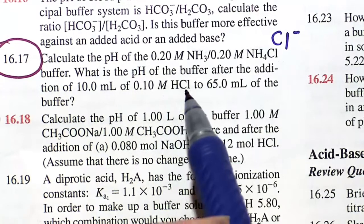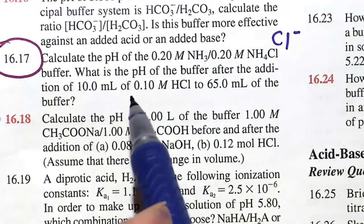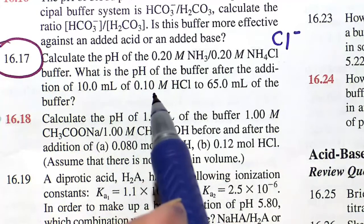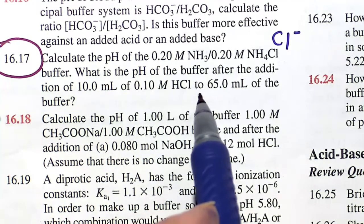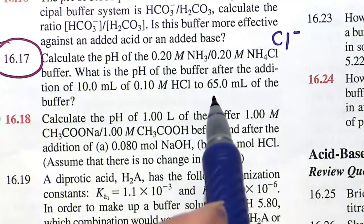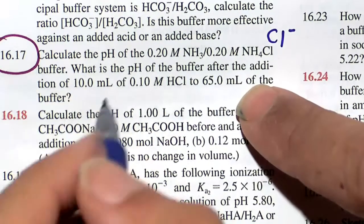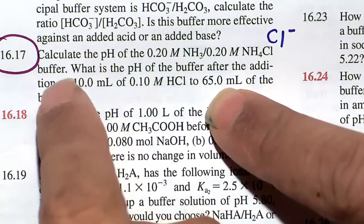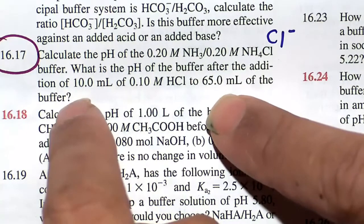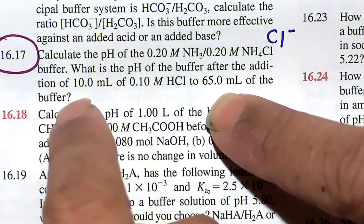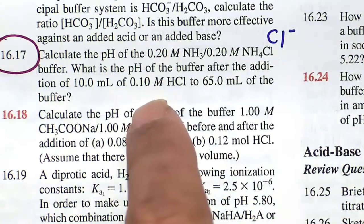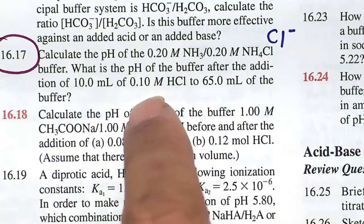In part B, we're going to disturb this buffer. The way we disturb this buffer is by adding an acid. HCl represents a strong acid - it's one of our six strong acids. We add 10 milliliters of a 0.10 molar concentration HCl. We're going to add it to 65 milliliters of our buffer. The total volume here is going to be 75 milliliters. What's the pH when we add this strong acid to this buffer?